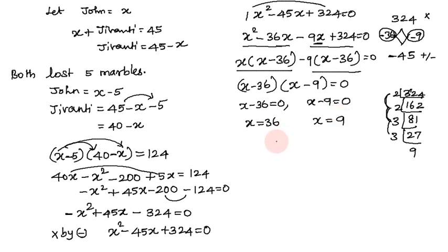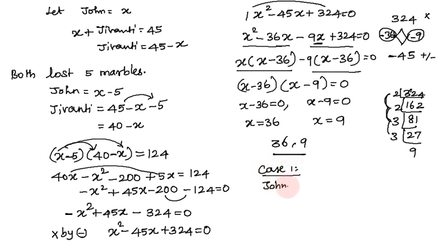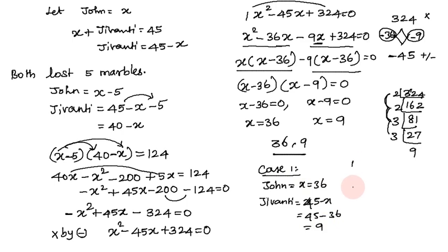Looking at the starting number of marbles, we get x equals 36 or x equals 9. Both are positive numbers, which makes sense for marbles. Case 1: if John has x equals 36 marbles, then Jivanti has 45 minus 36 equals 9 marbles. So John has 36 and Jivanti has 9.